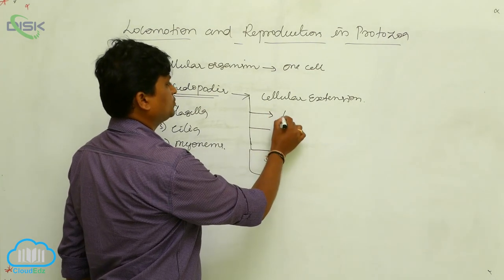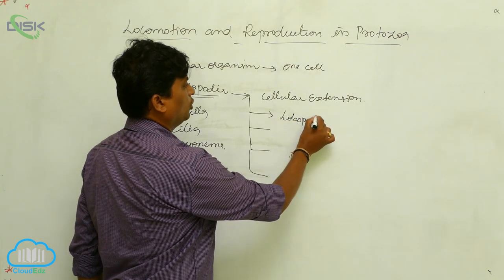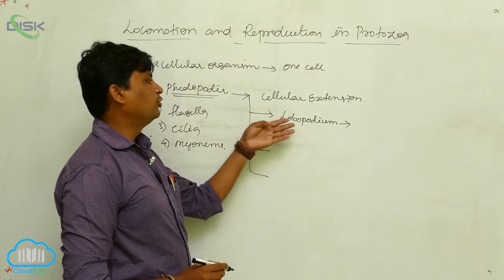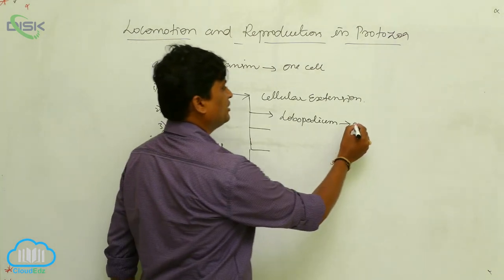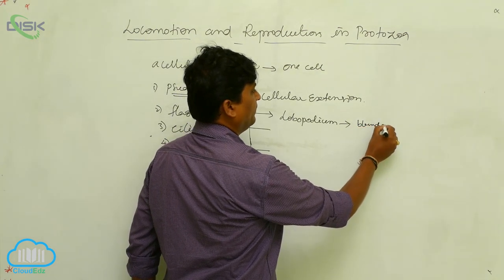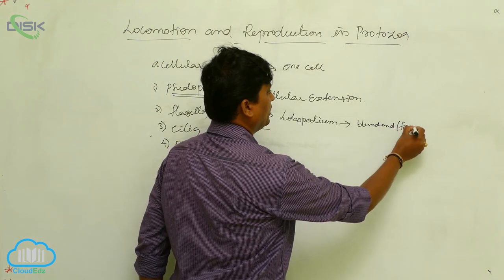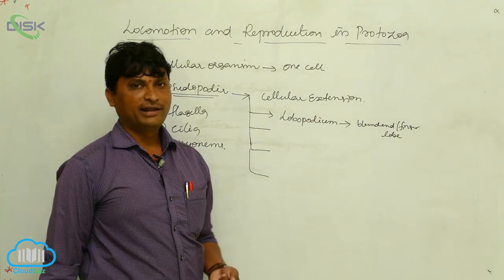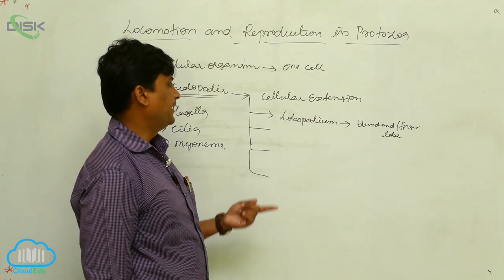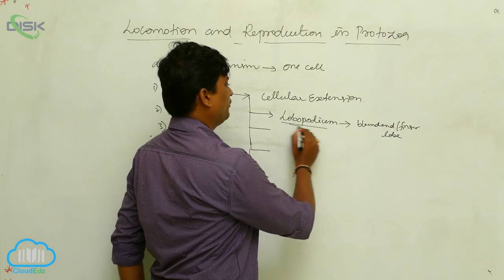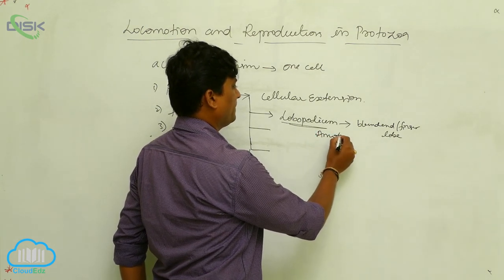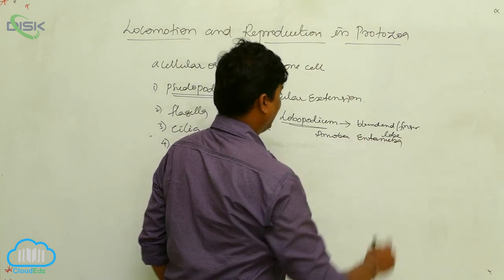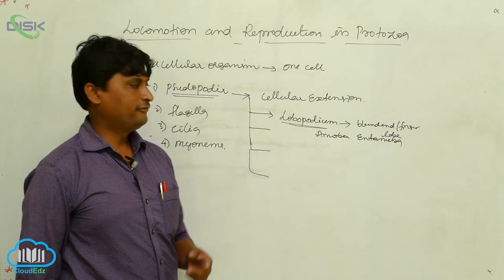The first type is lobopodia. Lobopodia means lobe-like structures — finger or blunt-ended extensions. A pseudopodium that forms a blunt, lobe-like or finger-like structure is called a lobopodial type. Examples are Amoeba and Entamoeba.